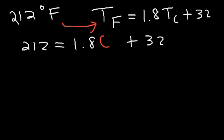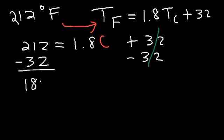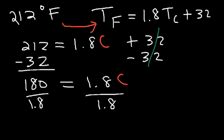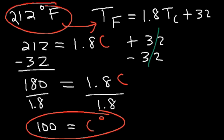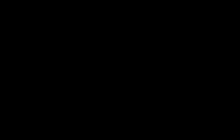Let's solve for C. Subtract 32 from both sides: 212 minus 32 is 180. Now divide both sides by 1.8: 180 divided by 1.8 is 100. So the Celsius temperature is 100°C, which is the boiling point of water. Water boils at 100 degrees Celsius or 212 degrees Fahrenheit.